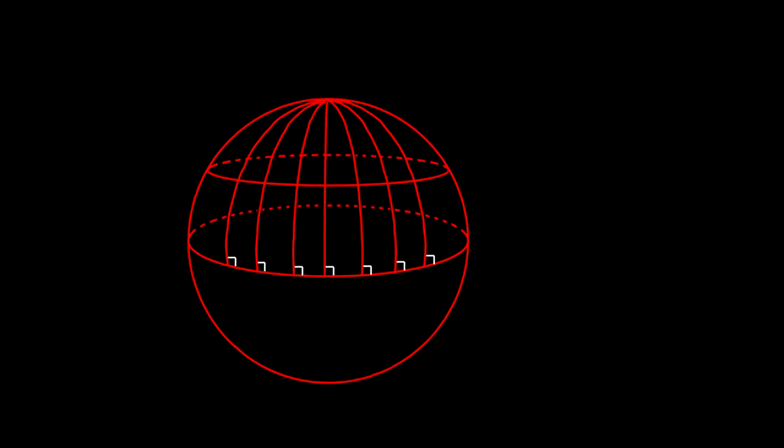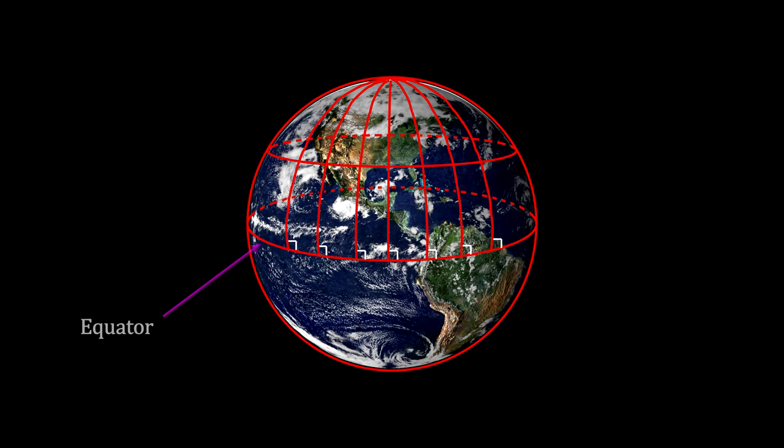Here, the curvature is constant throughout the surface. The baseline is the equator. Parallel to the equator, we have the lines of latitude. Perpendicular to the equator, we have lines of longitude. And they meet at the North Pole.